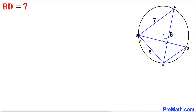Welcome to pre-math. In this video we have got a circle, as you can see in this diagram, such that these two chords BD and AC are perpendicular to each other. Moreover, the lengths of these chords are 5, 7, and 8 respectively. Now we are going to calculate the length of chord BD.